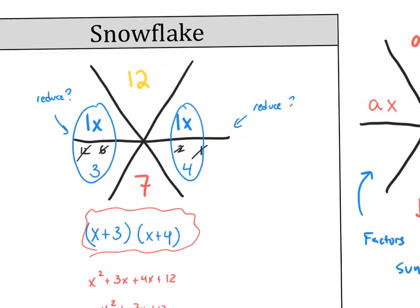So snowflake: ac goes on the top, b goes on the bottom, and your ax goes on the wings there. You find the factors of ac that sum to b. And then if need be, this fraction reduces and this fraction reduces. Not in this case. So those are my factors: x plus 3, x plus 4. And we're done. That's it.